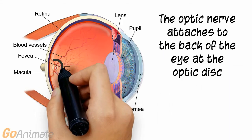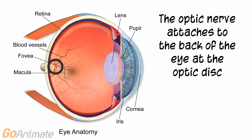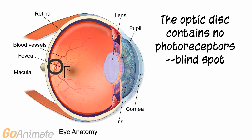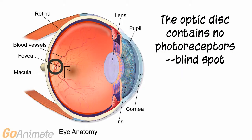The optic nerve attaches at the back of the eye at an area called the optic disc. The optic disc contains no photoreceptors, so it produces a blind spot.